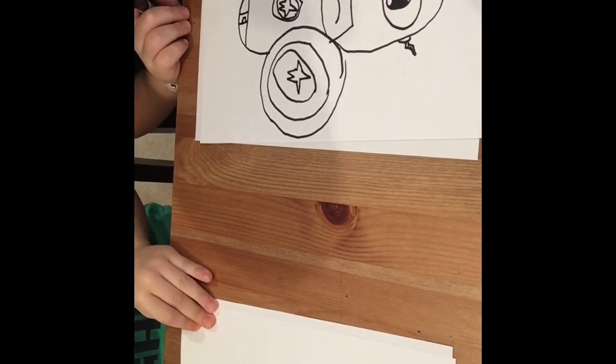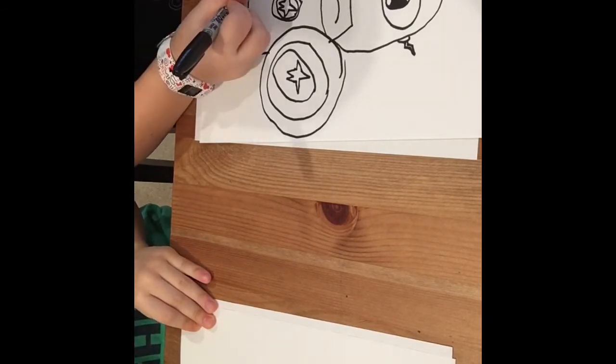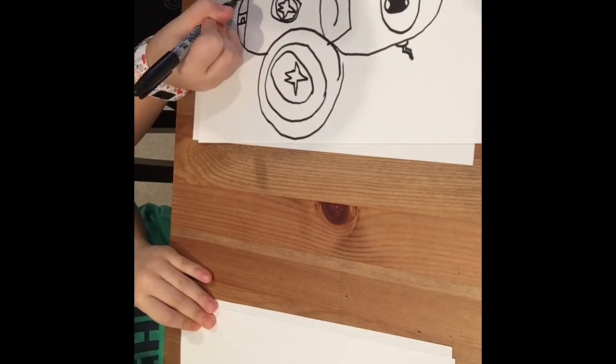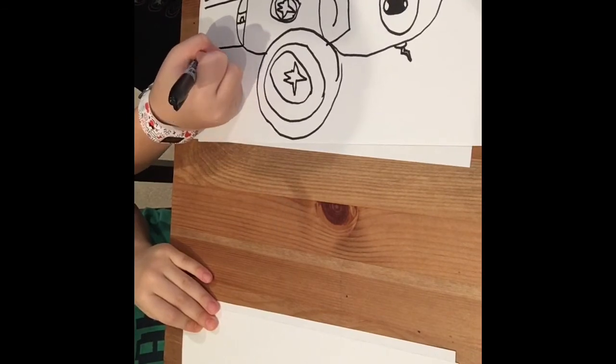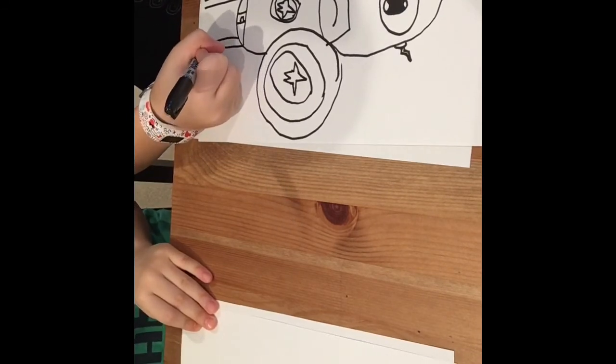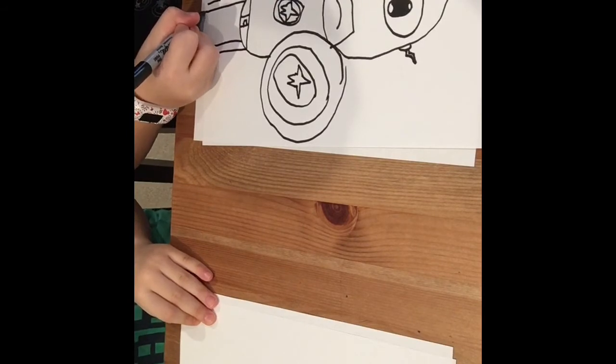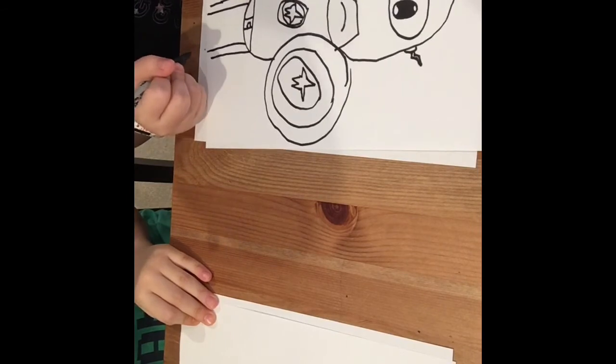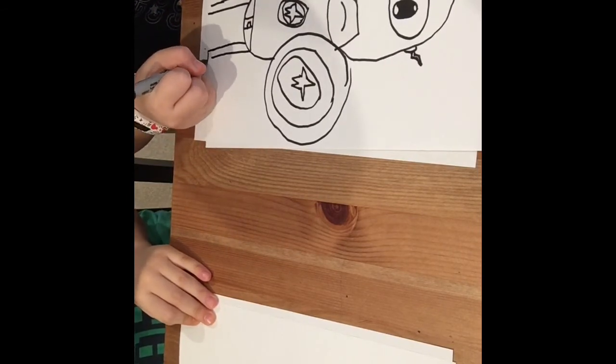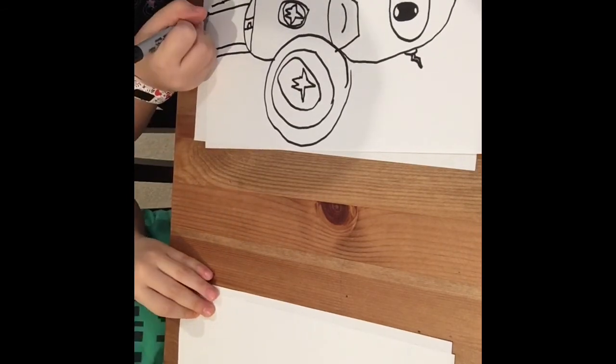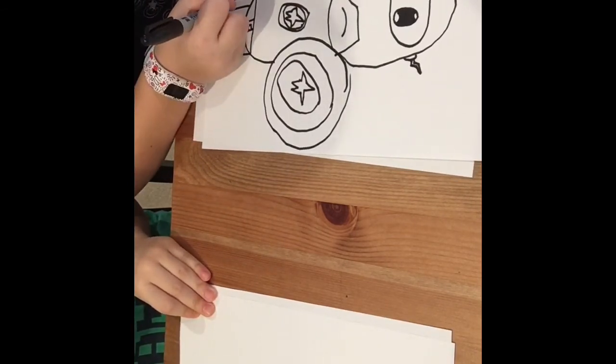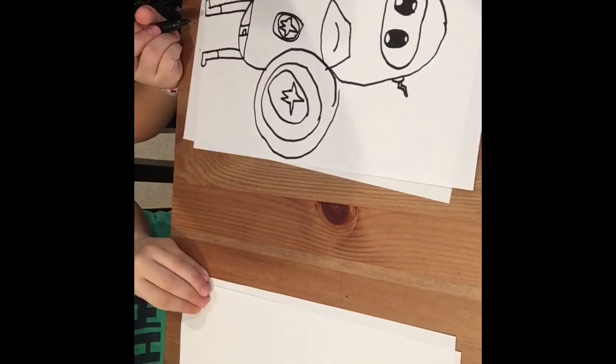And now we're gonna draw the legs. I'm not sure if his body is supposed to be curved like that. Why are his legs so tiny? And then we're gonna draw the line, extending more. Does he wear boots? Yes.